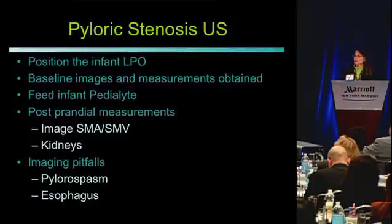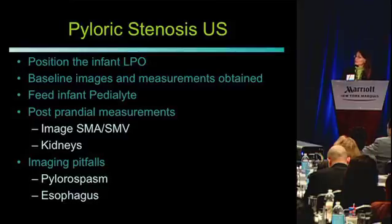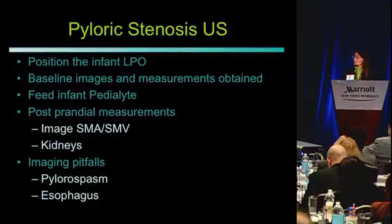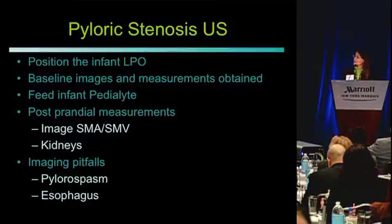How do we perform the exam? We roll the patient into an LPO position, get baseline images and measure the pylorus, give the child Pedialyte, and get postprandial measurements. We look at the SMA and SMV for signs of malrotation, check the kidneys quickly, and watch for pitfalls such as pylorus spasm or imaging the wrong structure entirely.